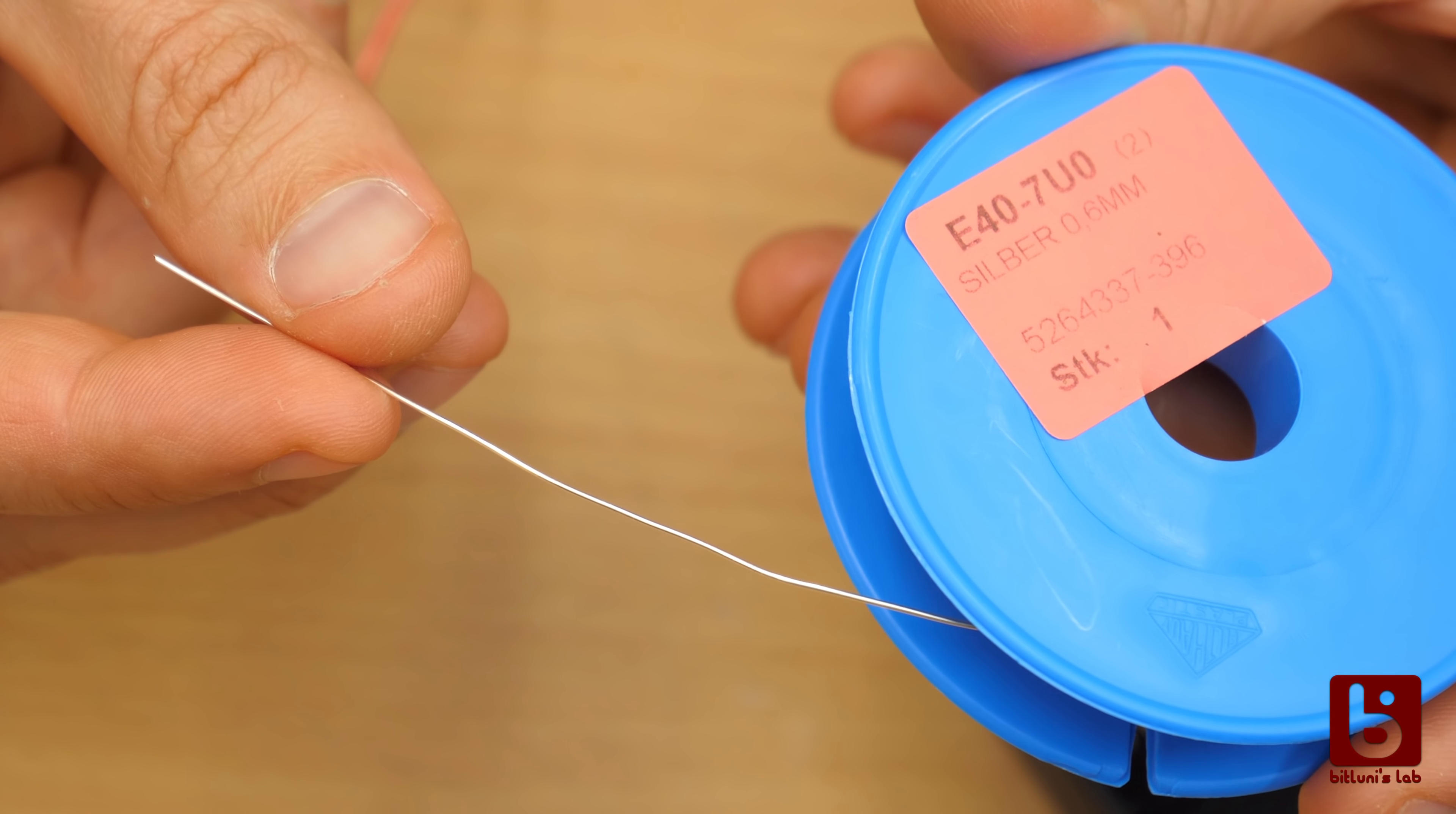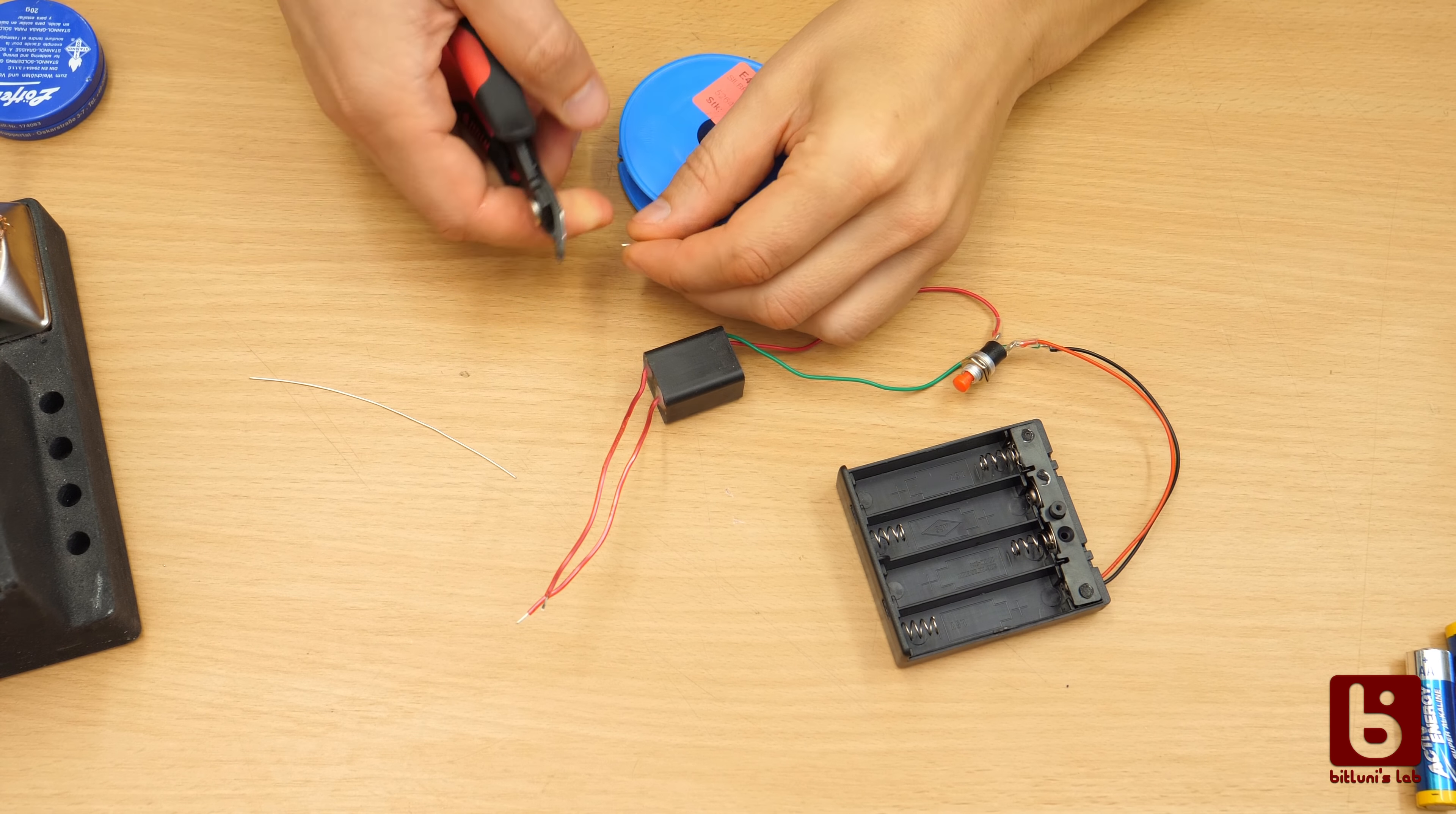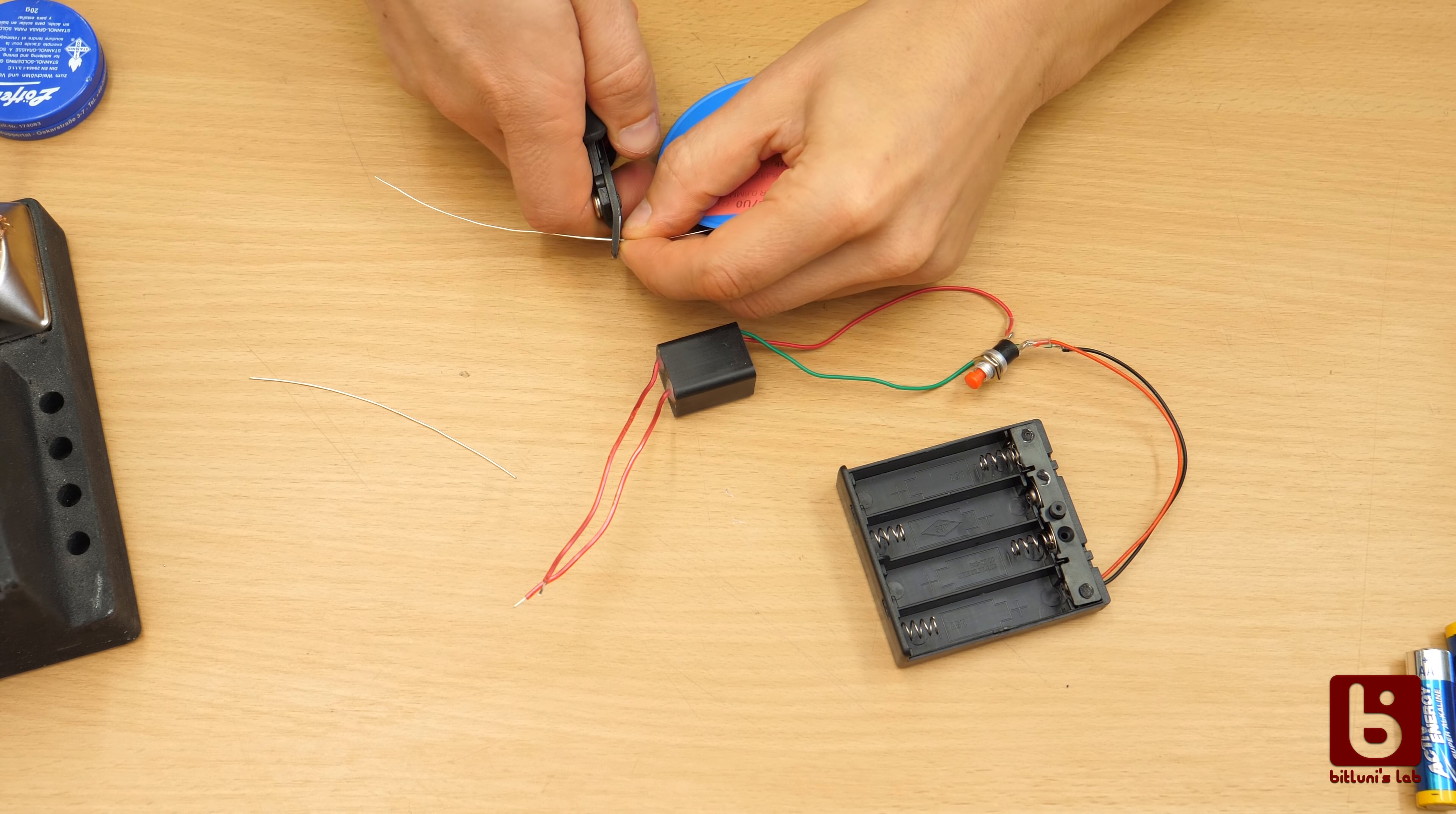What is missing now are two rods attached to the high voltage side. Silver wire of 0.6mm diameter should be sufficient.